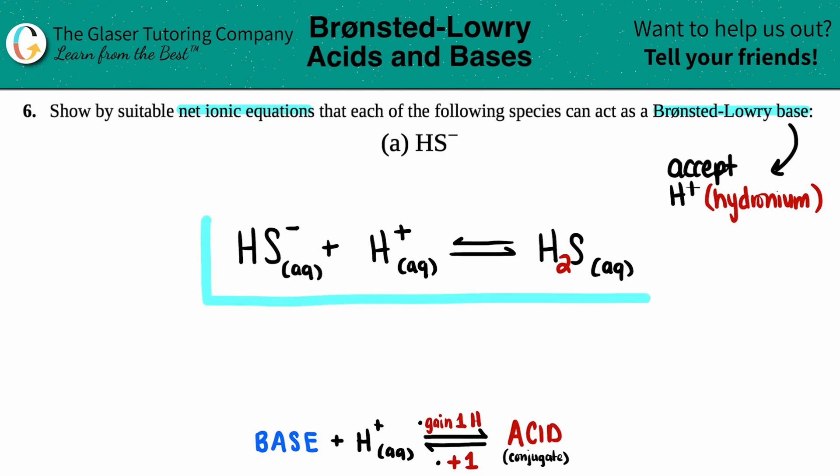This is your net ionic equation to show that HS minus can actually act as a Brønsted-Lowry base. And you're done. Hope this helped. Let me know in the comments, subscribe to the channel. Thank you for viewing the video. And I will see you all in later lessons. Bye-bye.